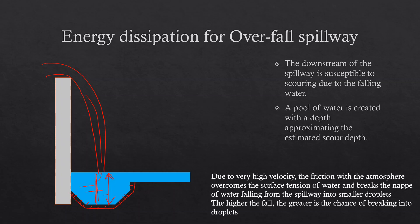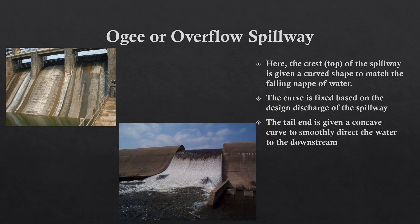The other type is the OG spillway, or overflow spillway. It has a curved shape at the top and a reverse curve at the bottom. The curve at the top coincides with the nappe of water that would otherwise flow over a sharp-crested weir. The toe of the spillway is given a reverse concave curve, so that water is smoothly diverted in the horizontal direction.